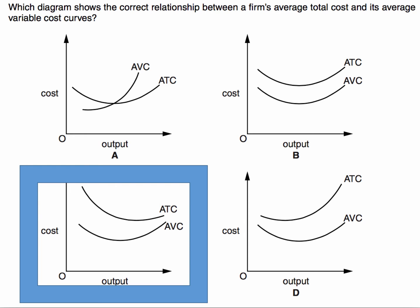average cost curves. The reason C is correct is because average total cost equals variable cost plus fixed cost. So the gap between those two curves is the average fixed cost.